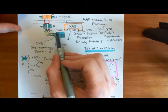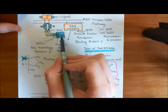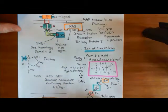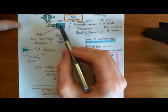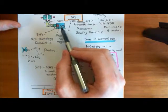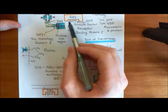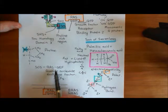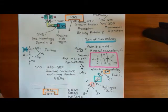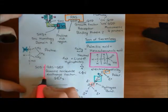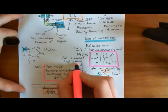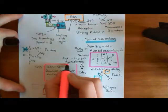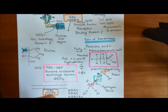The SH3 domain will bind to a proline-rich region in the SOS protein, which stands for son of sevenless. The SOS protein will then become activated, and it will act as a RAS-GEF, activating RAS monomeric G proteins by catalyzing the exchange of guanosine diphosphate for guanosine triphosphate that is bound to these RAS proteins.